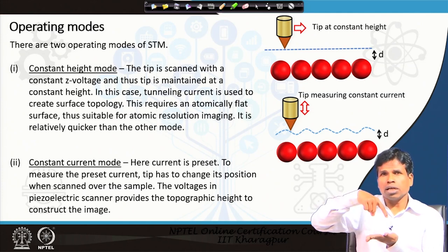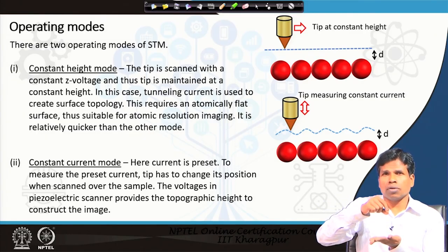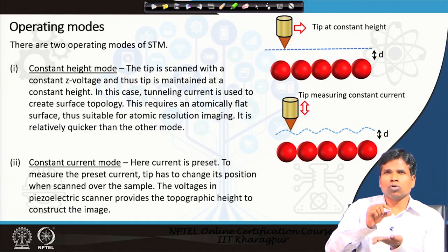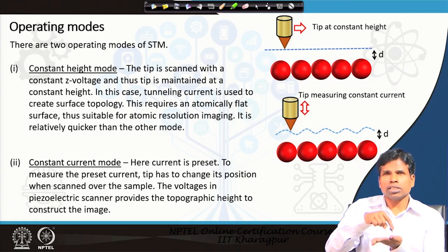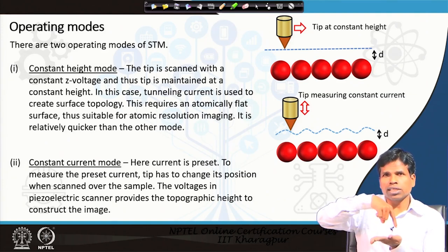The tip is maintained at the same height. To maintain the same height, we apply a constant voltage to our piezo scanner. By applying voltage we can change the height of the tip because the piezoelectric materials in the piezo scanner allow it to either contract or expand, and as it contracts and expands, the tip goes up or down. In constant height mode, we do not make the tip go up and down — we ensure the tip moves at a constant height above the sample.